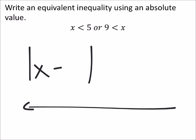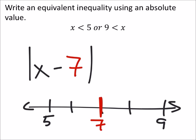So if we looked at a number line, right, this would be 5, 6, 7, 8, 9. So the number right between these would be 7 right here. That number goes in the absolute value right there.